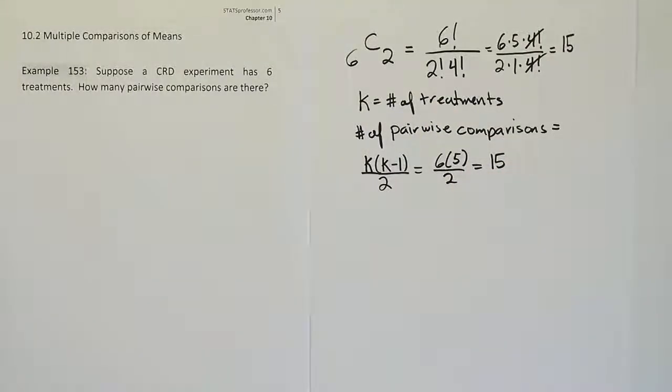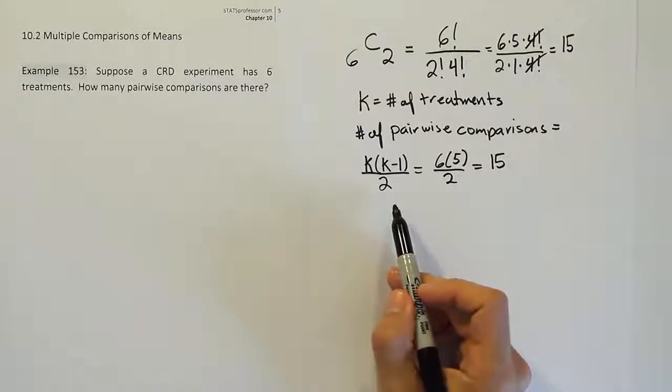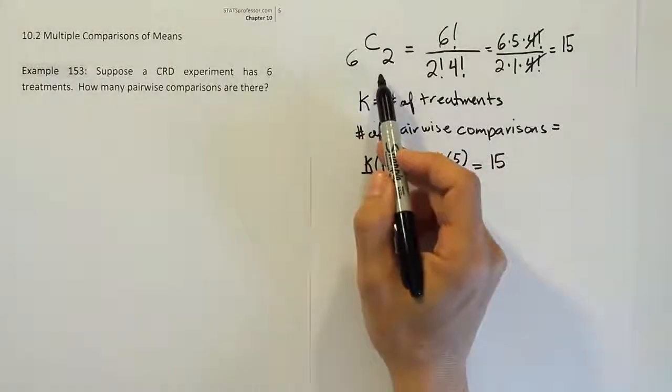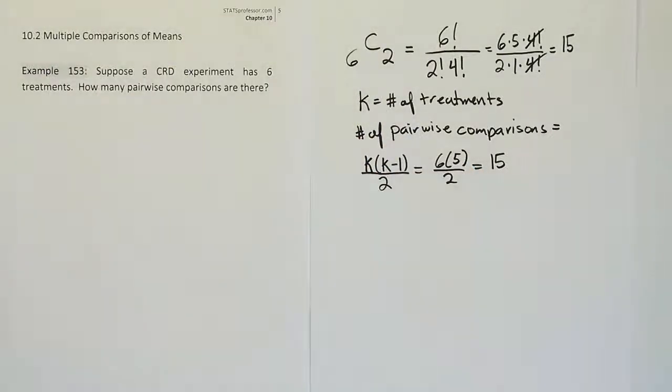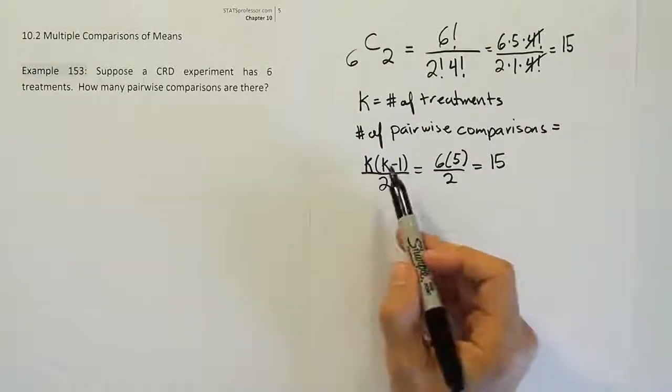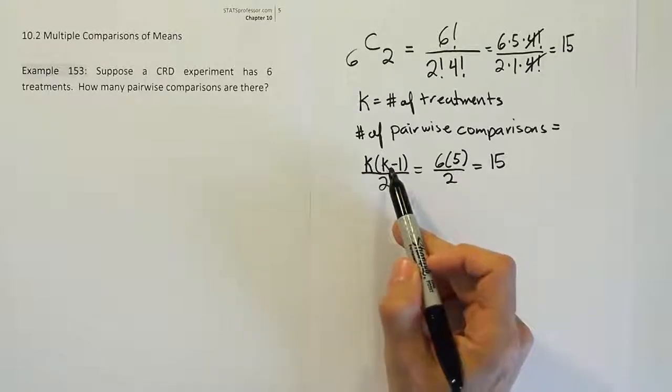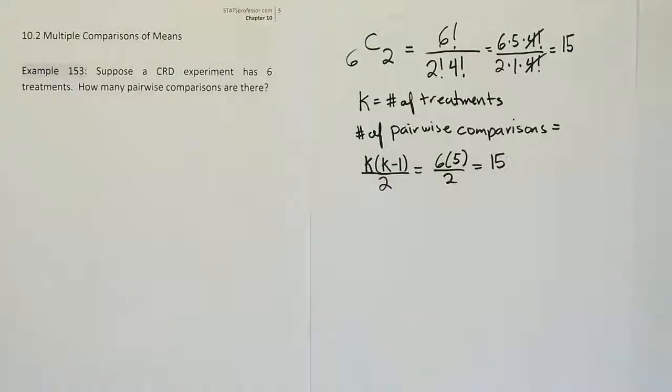All right so that's what we're going to do from now on, just remember this formula. Remember it is the same as combinations, if you remember combinations you can just use that, but otherwise you just use this formula and just say the number of treatments times one less than that divided by two and that gives you the number of total comparisons that can be made.